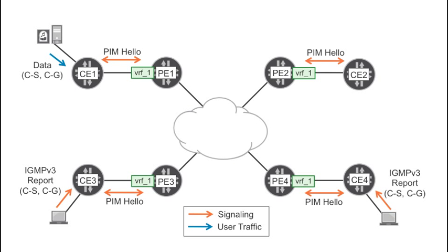Let's review a bit of multicast theory. There are two flavors of multicast. In Any Source Multicast, or ASM mode, the receiver only signals group membership and it's up to the network to find out what sources are actively sending traffic to that group. On the other hand, in Source Specific Multicast, or SSM mode, receivers signal their interest to receive traffic destined to a specific group and originated at a specific source.